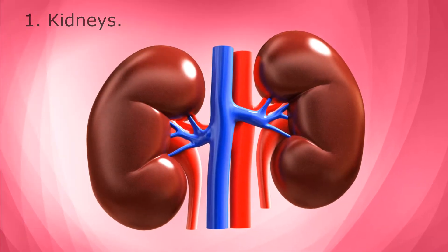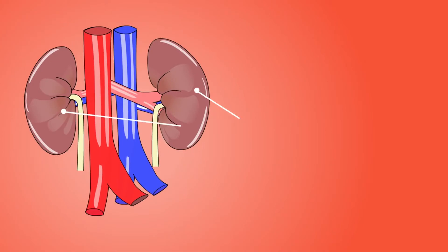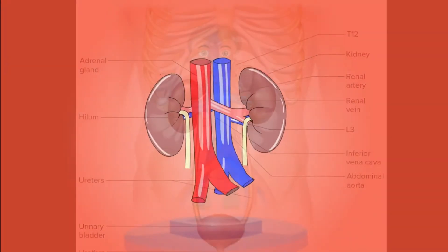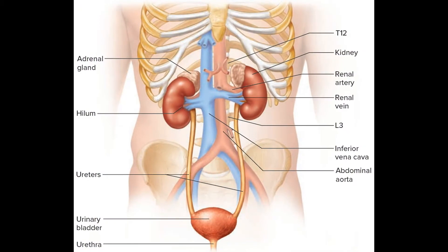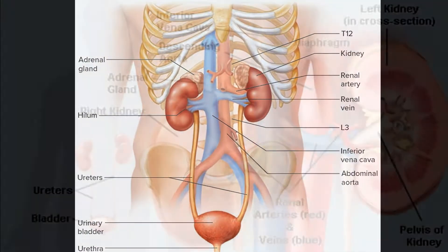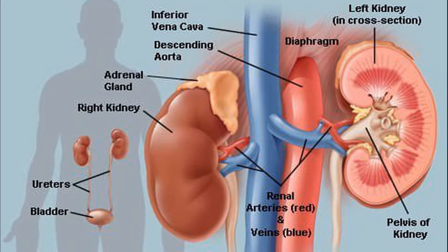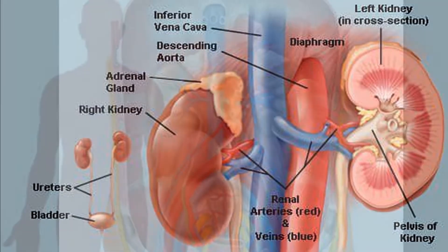Kidneys: The two reddish-brown bean-shaped kidneys are situated towards the back of the abdomen, one on either side of the backbone at the level of the last two ribs. The right kidney is located slightly lower than the left one.